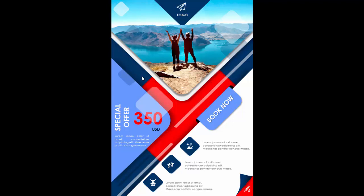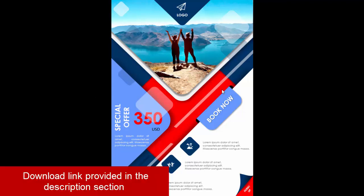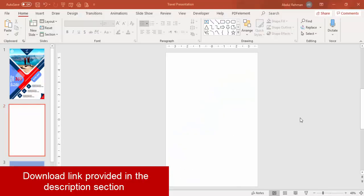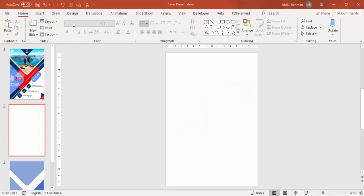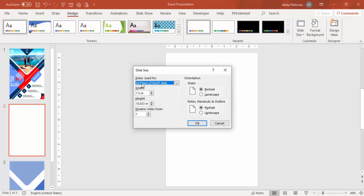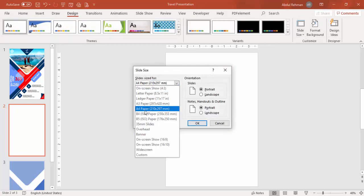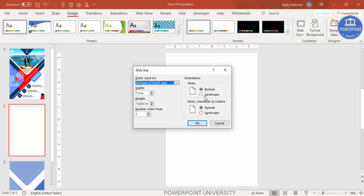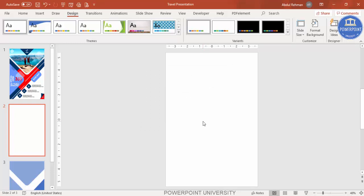Let's see how to do this in PowerPoint. Add a new slide and change the slide size to A4 size — go to Design, Slide Size, select Custom Slide Size, and from the drop-down select A4. Change the orientation from landscape to portrait and click OK. It will ask two options, so just select either maximize or ensure fit and click OK.